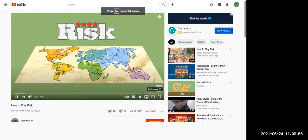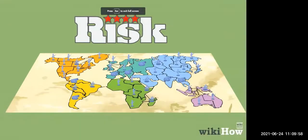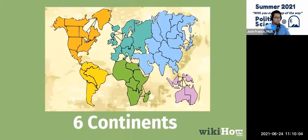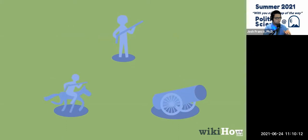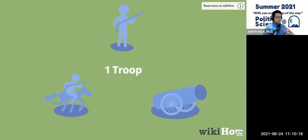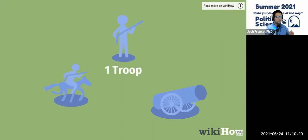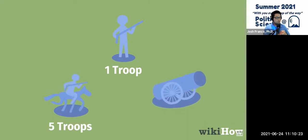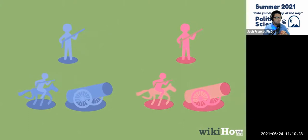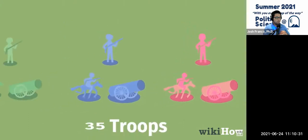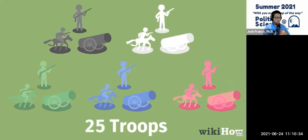Risk is a fun board game where players try to conquer continents and wipe out their opponents' armies. To set up the game, lay out the board, which features six continents divided into 42 countries. Each player chooses a color for their army. There are three unique units: each infantry piece counts as one troop, each cavalry piece counts as five troops, and each artillery cannon represents ten troops. If you're playing with two players, each player starts with 40 troops, subtracting five troops for each additional player.